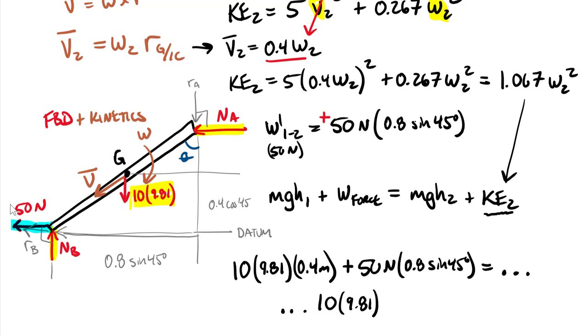Then we add in our final kinetic energy, which is 1.067 times omega 2 squared. Cross-check this equation that you can only have one unknown. Here's my single unknown, omega 2. Because this is a scalar equation, we'd need to bring in other equations if you had more than one unknown.